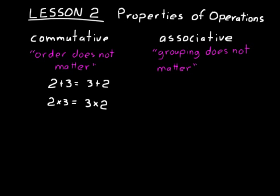Think about subtraction — that wouldn't work. Two minus three does not equal three minus two. The order does matter there. You'd get a negative number, which you'll learn about later in the year. So it doesn't work for subtraction or division.